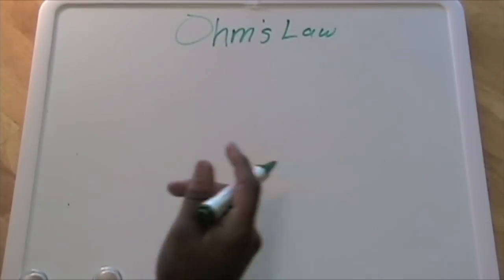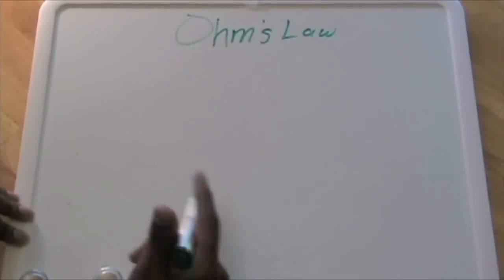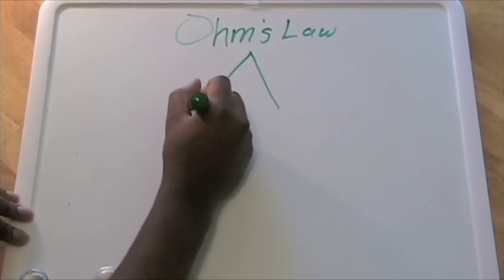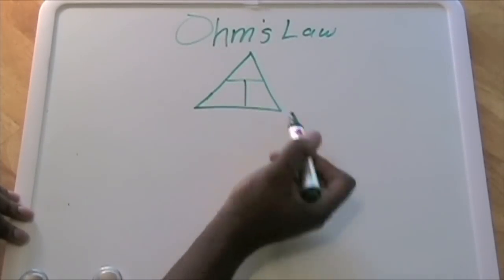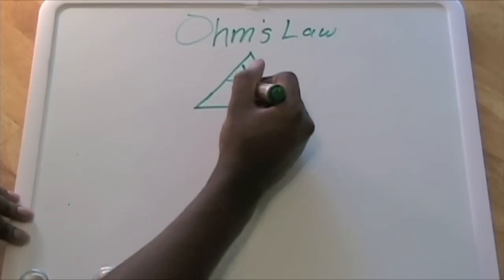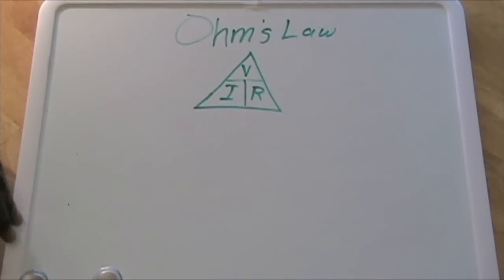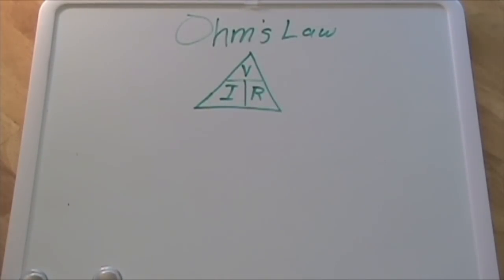Basically from Ohm's Law I can get a couple of formulas or equations that will help me determine different values or information that I may need to know. To remember those formulas, I remember a triangle. On this triangle, I know that V is always on top, and then on the bottom here I have I and R. The location of I and R really doesn't matter—R can be over here or R can be on the right side, it doesn't matter.